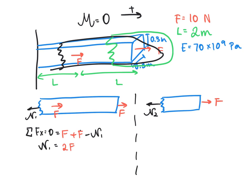For the section on the right, we do the same thing, except this time we only have one force. The force is in the positive direction, and the normal force is in the negative direction, so F = N₂.